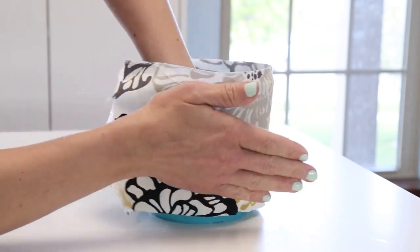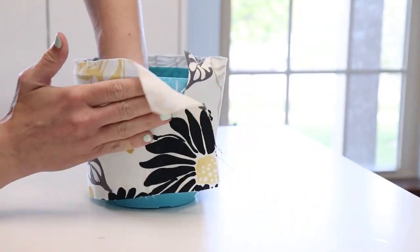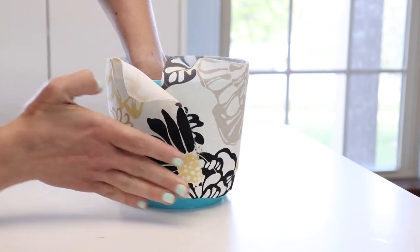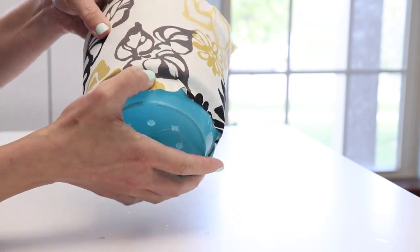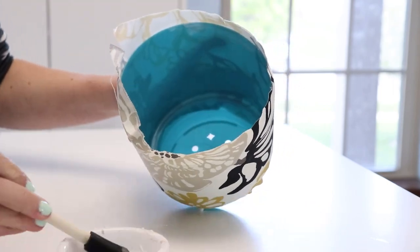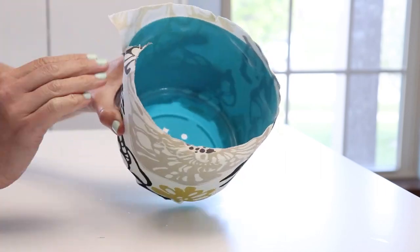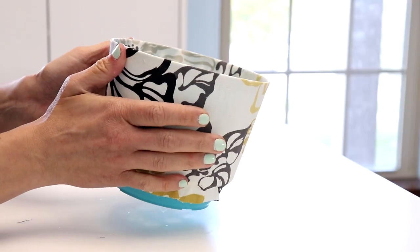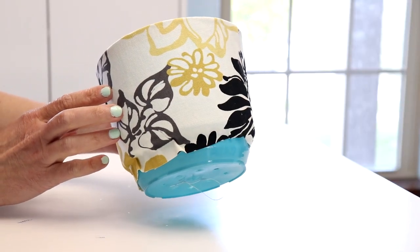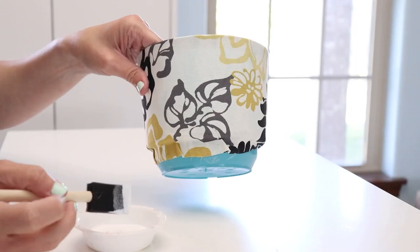And then you also want to fold the fabric over the bottom and the top, securing everything really well. Once you have everything stuck on there, let's set it aside and just let it dry. Then we're going to come back and add another coat of Mod Podge over everything to add a really nice seal.